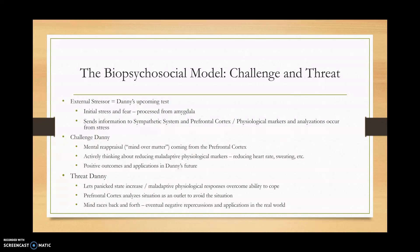The challenge character of Danny will re-appraise the situation — in other words, it will undergo a sort of mind over matter. Danny will consciously think about the processes which are causing him to show signs of arousal in the first place. It's all in his head is essentially what he will think. This will all come from his prefrontal cortex, in which he actively thinks about reducing these maladaptive physiological markers, such as a reducing heart rate, sweating, and the overall panic state that he was previously in.